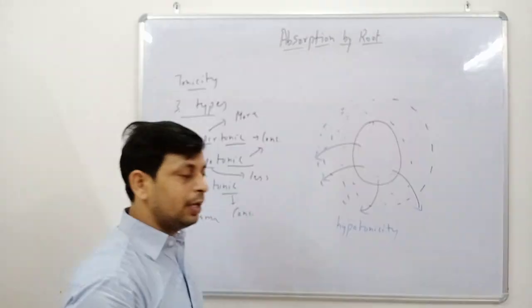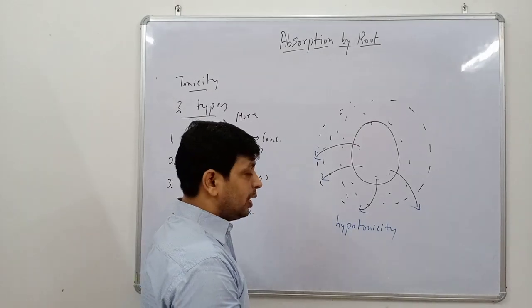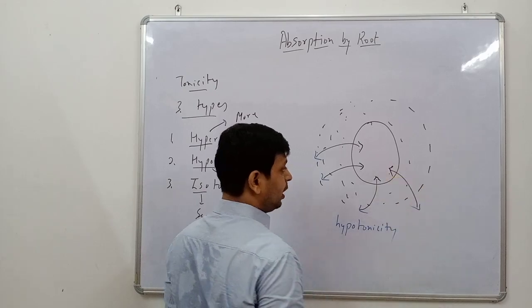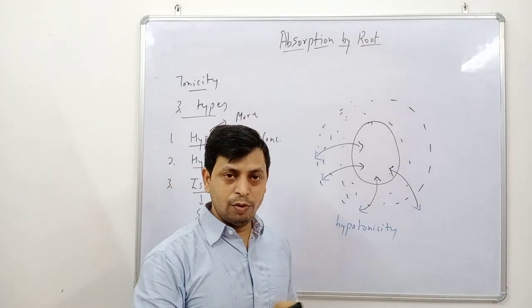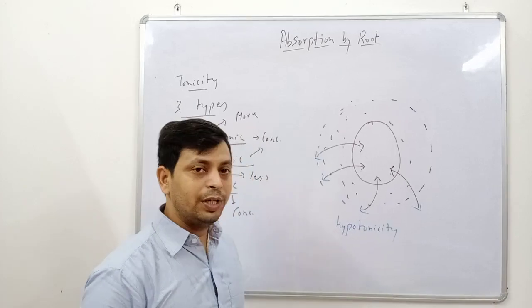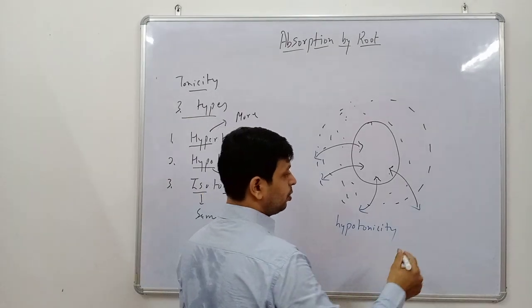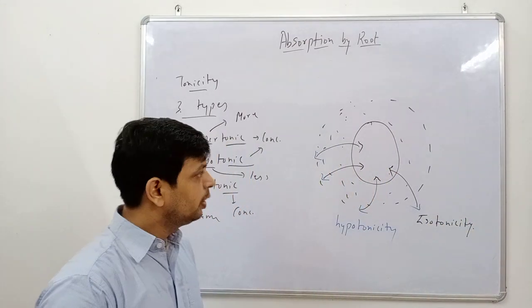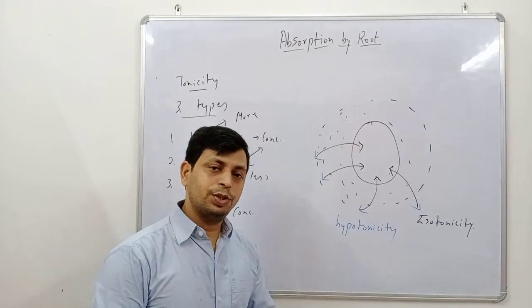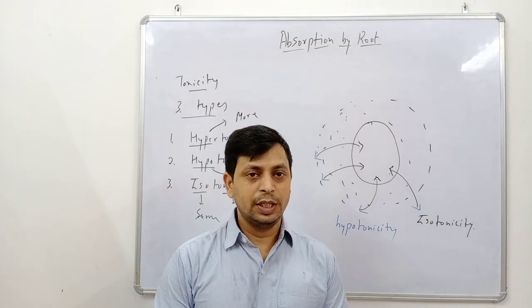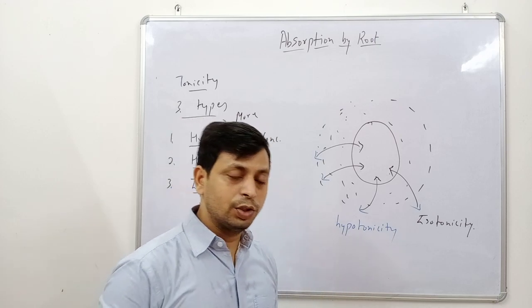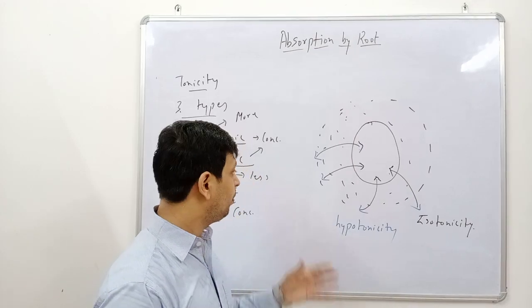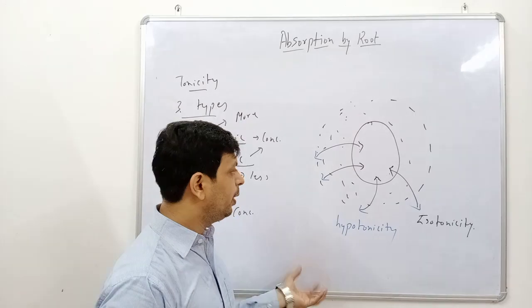In isotonic solution, 'iso' means same — the concentration is the same outside and inside, so there is no flow of molecules either outside or inside. This is called isotonicity. Questions are asked on a diagrammatic basis where a condition is shown and you are asked what is happening — whether water molecules are moving or not. This is very important.